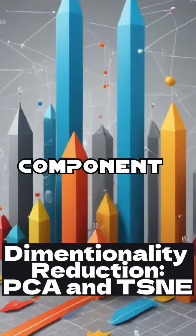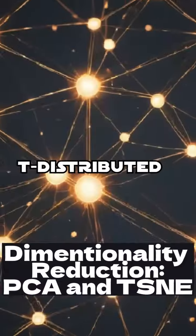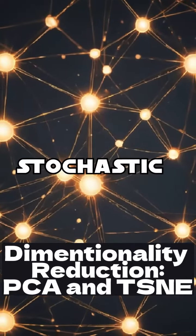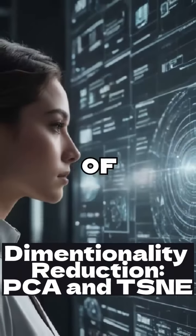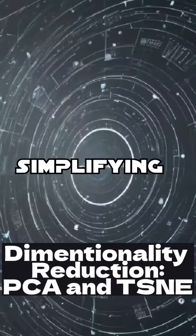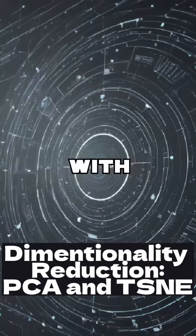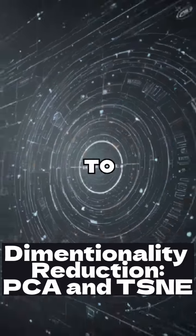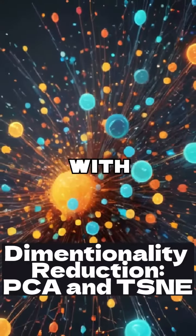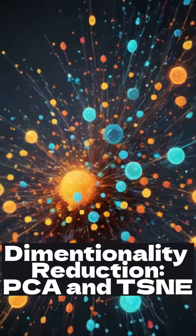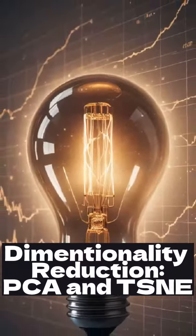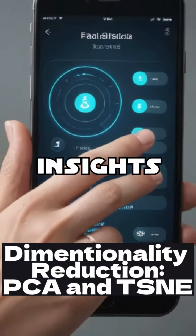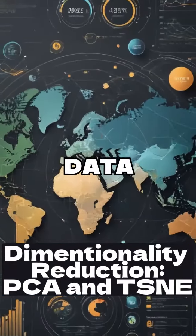Both Principal Component Analysis and T-distributed Stochastic Neighbor Embedding transform our view of data — from simplifying dimensions with PCA to uncovering clusters with TSNE. They make complex data more accessible and insightful. Follow for more insights on simplifying data transformation.